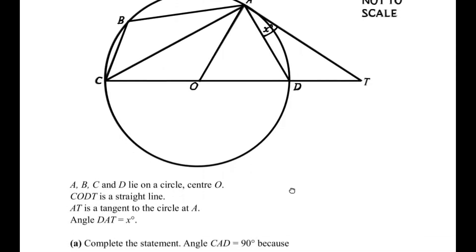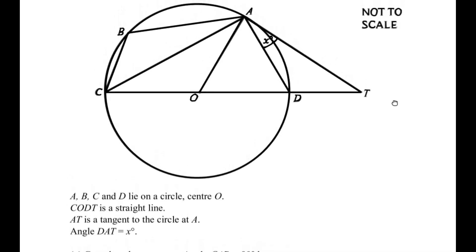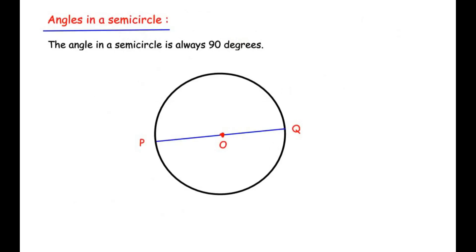The first sub question is: complete the statement — angle C, A, D is equal to 90 degrees because... Here they have already given the value of angle C, A, D and we have to give the reason why angle C, A, D is 90 degrees. So let us understand the circle theorem for this case, which is angles in a semicircle.